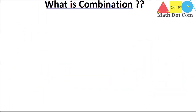Hello everyone. Our today's topic is what is combination and how it differs from permutation. Whenever we talk about permutation, combination is always there as they always come together in mathematics, but they differ from each other. How do they differ from each other? Let's see.